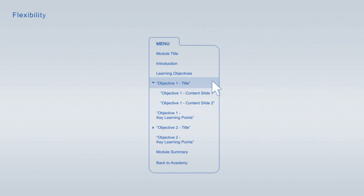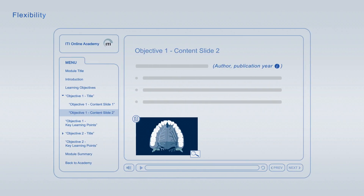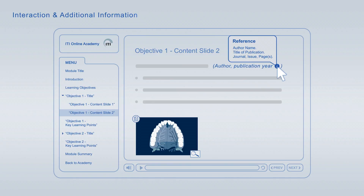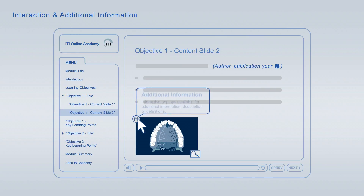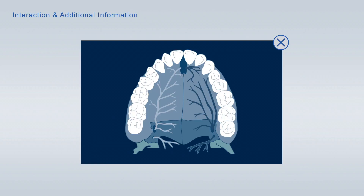You are free to jump from item to item at any time using the module navigation. If you interrupt a viewing session, you can always resume later at the exact point where you left off. The slides are enriched with interactive elements. You can expand literature references to get detailed information about the publication. In addition, you can look up definitions of specific terms, get further information about images, and enlarge images to scrutinise them in more detail.